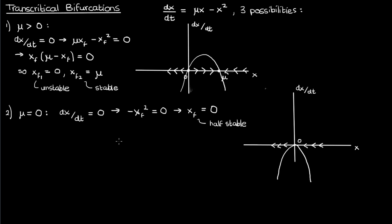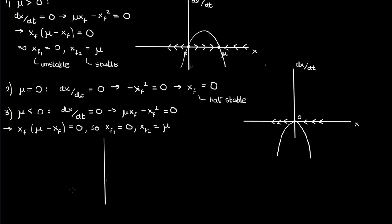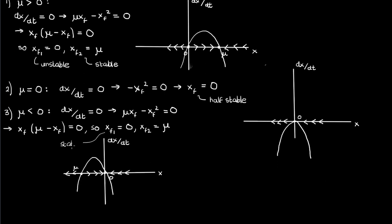Let's look at what happens if μ is negative. Solving for the fixed points again gives two solutions at zero and μ. However, evaluating stability by plotting the phase portrait shows that the fixed point at μ is now unstable, while the fixed point at zero is now stable.